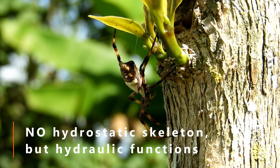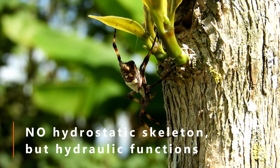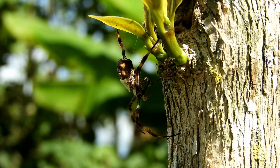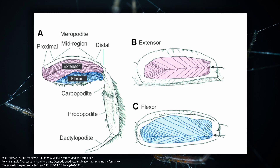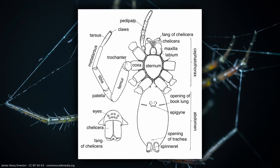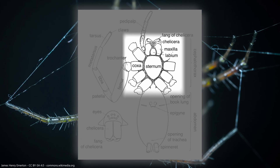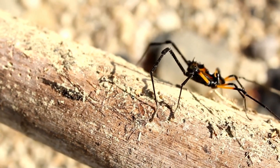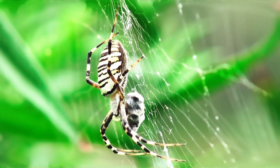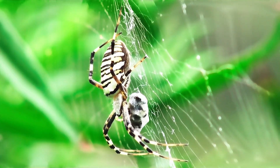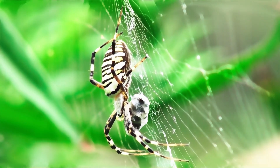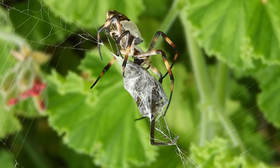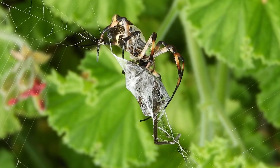Another example that doesn't have a true hydrostatic skeleton but still uses hydraulic pressure for movement are spiders. While spiders have a chitinous exoskeleton for protection and structural support, they lack the typical extensor muscles found in many other arthropods. Instead, they rely on hydraulic pressure generated in their prosoma to extend their legs. The prosoma contains a network of hemolymph-filled sinuses, and when these sinuses are pressurized, it causes the legs to extend. Spiders can adjust the hemolymph pressure in various leg segments to achieve remarkable precision and agility in web-building and capturing prey.